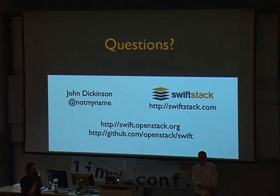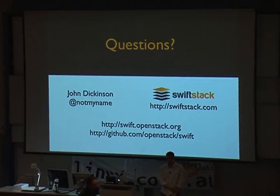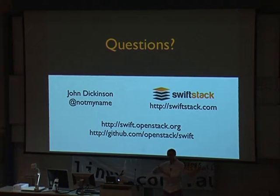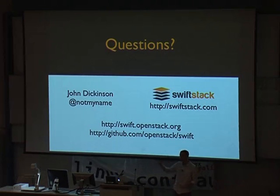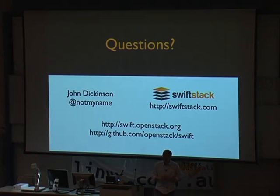Question: Any plans to implement nested containers? Nested containers are not supported — it's a very flat namespace. You have accounts at the top, containers underneath that, and anything underneath that is objects. You can have pseudo-nested directories and a simulated directory structure using slashes, but it's not a first-level concept within the API. Question: What languages does Swift have bindings for?